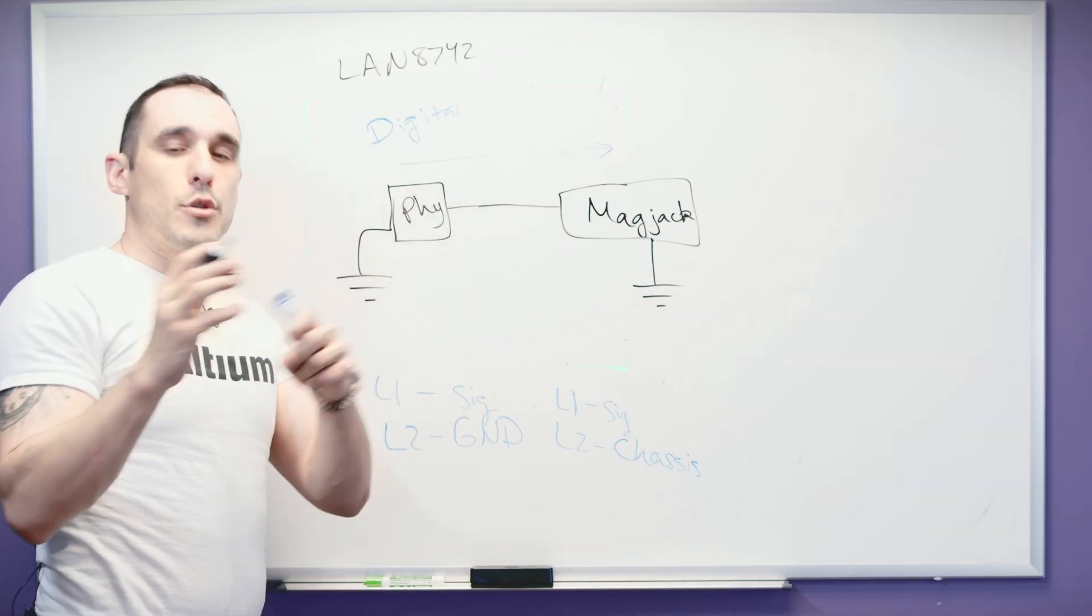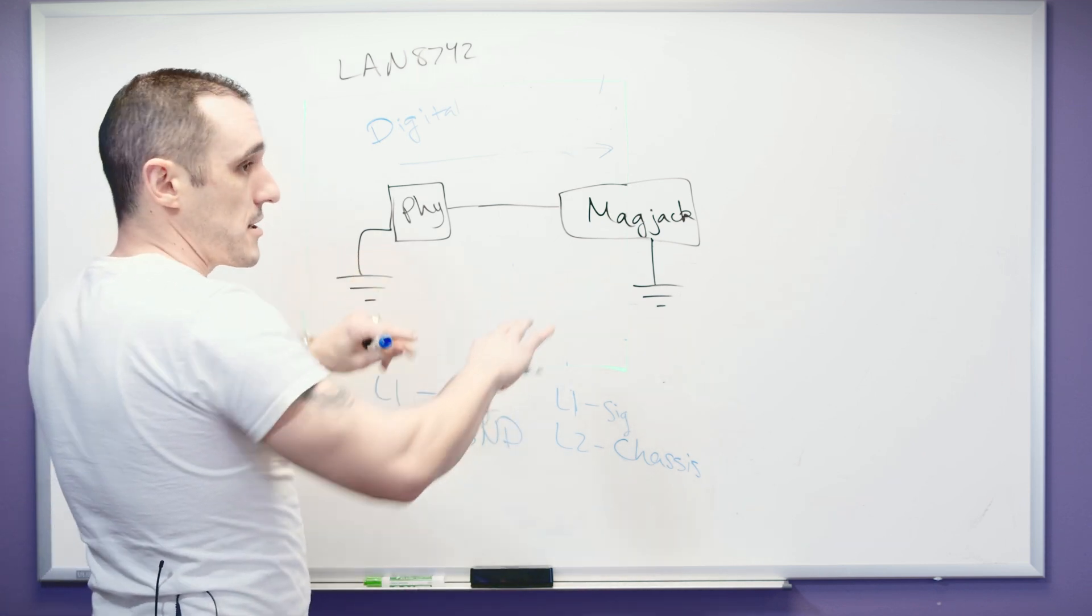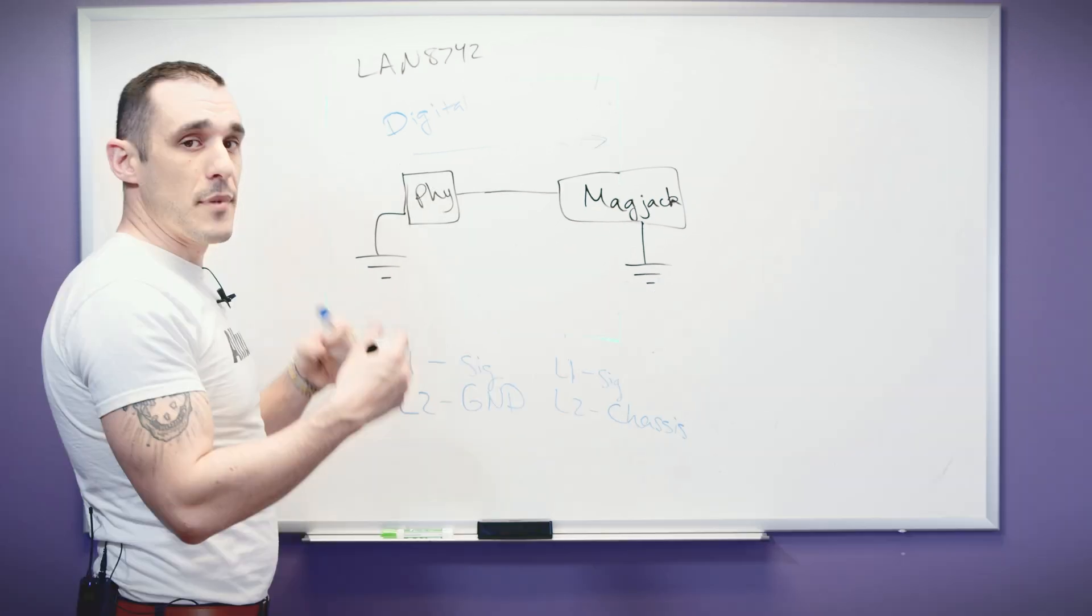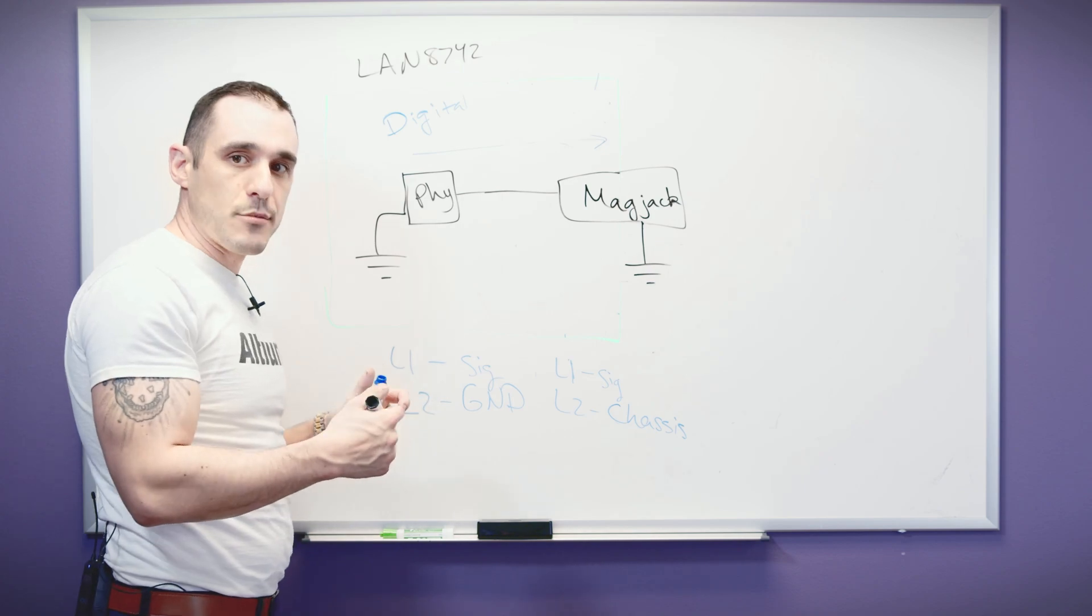So now you have a single ground everywhere, you have the magnetics that are built into the jack, you don't have to worry about placing and routing termination circuits and everything is easy for you if you just use a mag jack. You don't have the same level of isolation that you might have if you physically separate all of the grounds as I showed in some of these other options but this is the easiest to implement from a placement and routing standpoint.